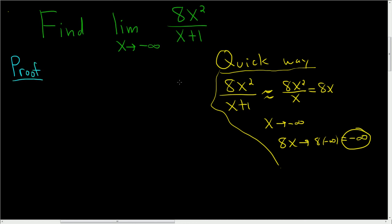If you look at the fast way, you kind of see some motivation to do it the correct way. We ended up really just dividing by x here, right? We divided by x. So what we'll do is we'll divide everything by x.